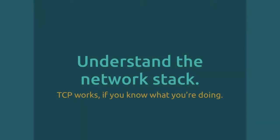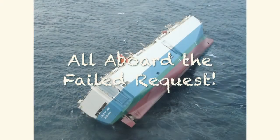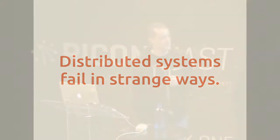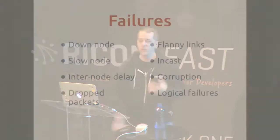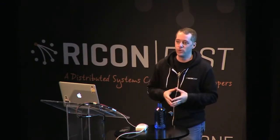The takeaway here is you have to understand the network stack. TCP works if you know what you're doing — it's not just a stream of bytes, although it may appear like that. You actually have to break it into chunks, and the network does that for you. Now, I hope you've already realized from this conference that distributed systems fail in really interesting and strange ways — node goes down, slow nodes, delay between nodes, packets are dropped, links are flappy, TCP incast, corruption, and application-level logical failures.